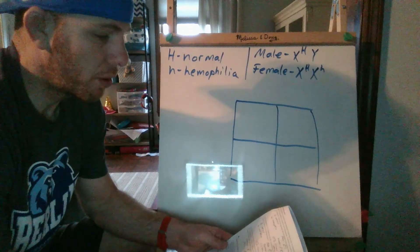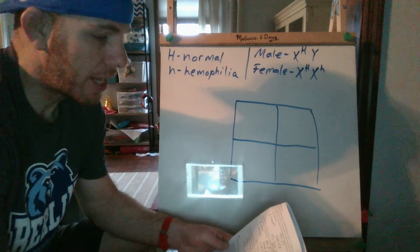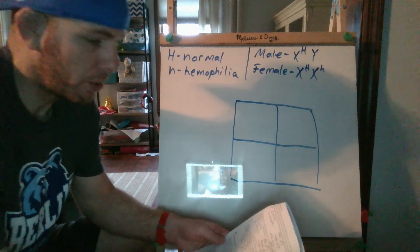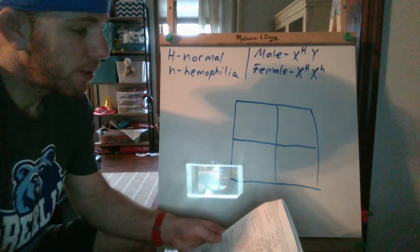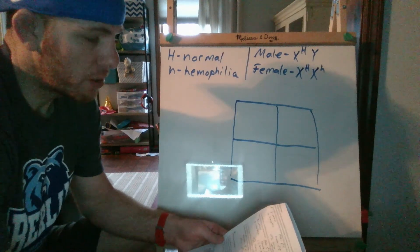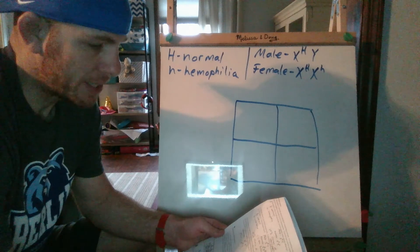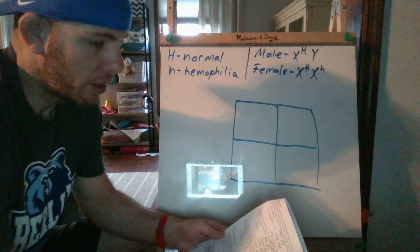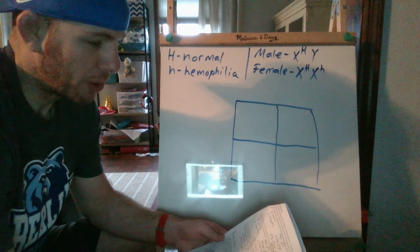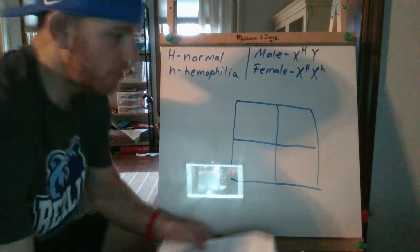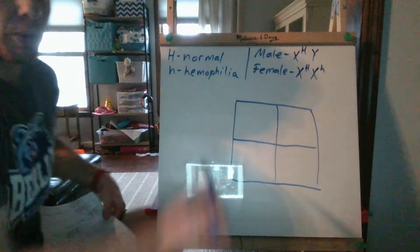It says hemophilia is a disorder where an individual's blood does not clot. It is caused by a recessive allele, lowercase h. The gene for hemophilia is located on the X chromosome. A normal man marries a woman who is heterozygous for hemophilia. Find the genotypic and phenotypic ratios of their offspring. I've already written this down.